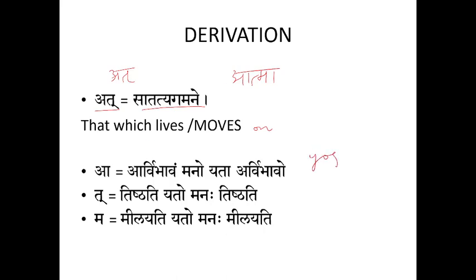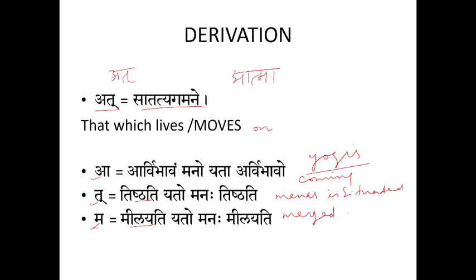But in yogic science, yogis say that this Atma word can be split into three parts: A, Thu, and Ma. 'A' represents Aavirbhavam Mano — from where the mind is originating. 'Thu' is Thishtati — where the Mana is situated. 'Ma' is Nilayati — where Mana is getting merged. So Atma indicates that Mana is coming, rising, situating, and merging into that.